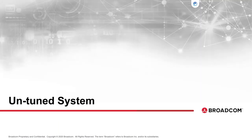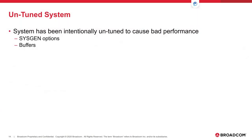Now let's look at the untuned system. We have an IDMS system that is basically untuned, causing bad performance — the SYSGEN options were not set to the best values and the buffer sizes are too small. We'll look at some reports we ran, monitor statistics, and then take a look at those statistics.